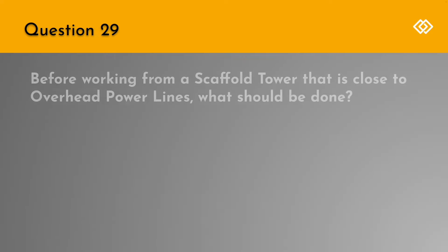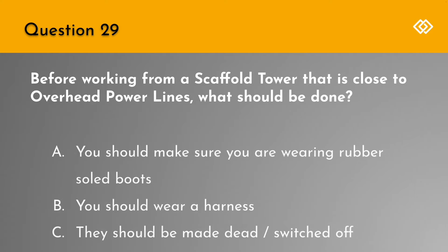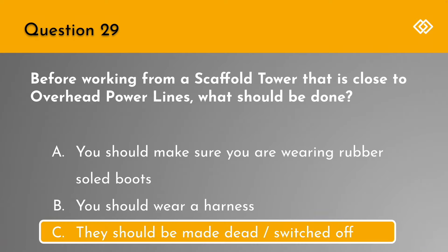Question 29. Before working from a scaffold tower that is close to overhead power lines, what should be done? A. You should make sure you are wearing rubber-soled boots. B. You should wear a harness. Or C. They should be made dead or switched off. The correct answer is C. They should be made dead or switched off.